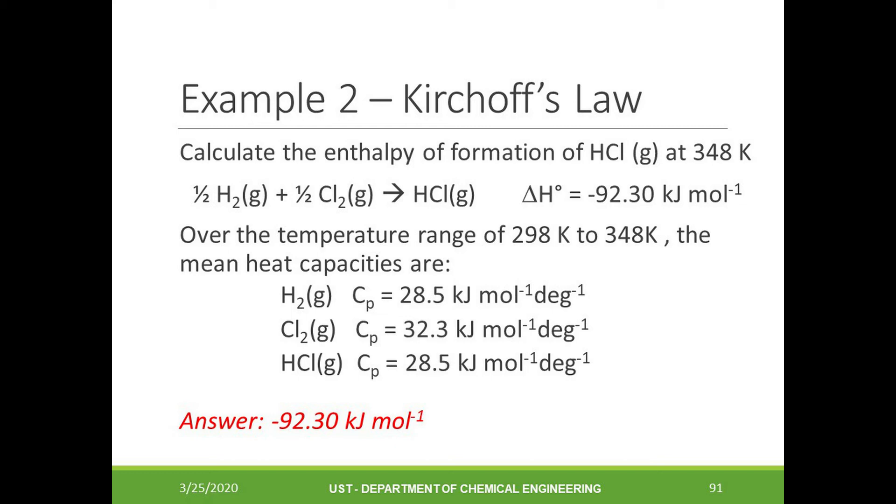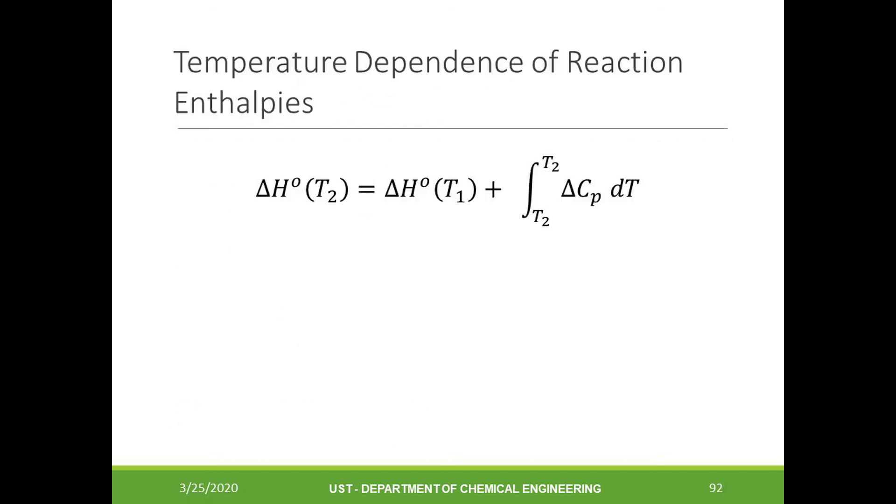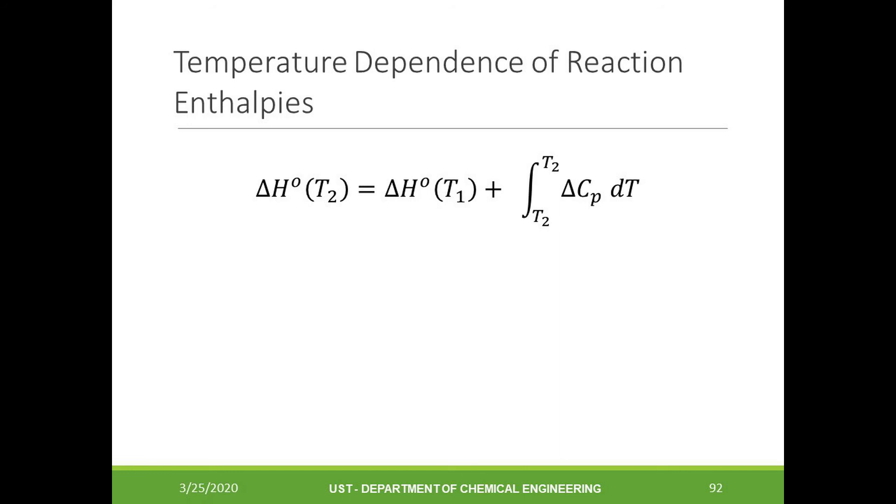Assume that the heat capacities are independent of temperature. As we've seen in the last example, the variation of heat capacity over temperature can sometimes be ignored if the temperature range is small. However, when it is necessary to take the variation into account, a convenient and common empirical model used to fit heat capacities over a wide range of temperature is given by this equation.